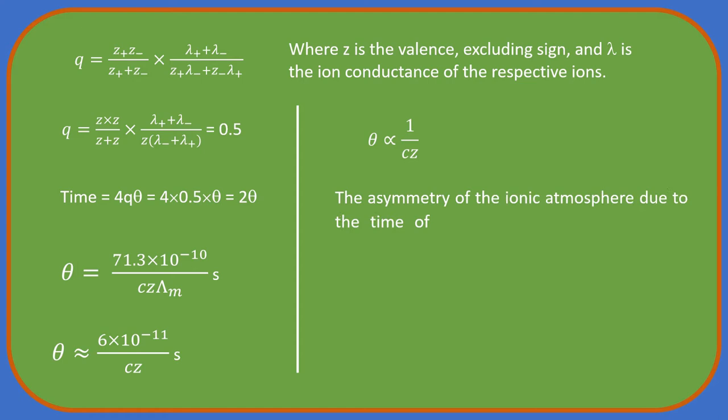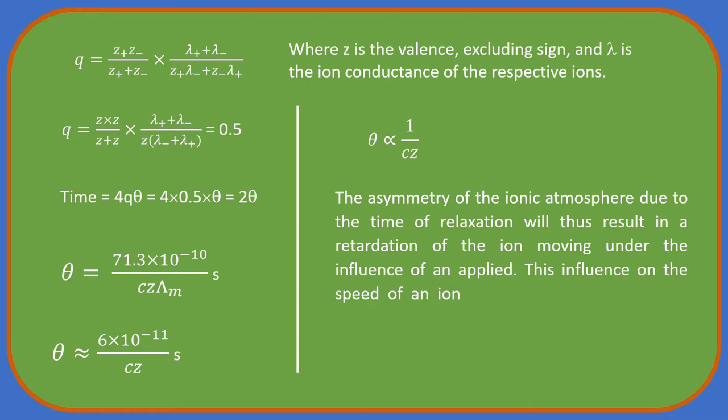The asymmetry of the ionic atmosphere due to the time of relaxation will thus result in a retardation of the ion moving under the influence of an applied field. This influence on the speed of an ion is called relaxation effect or asymmetry effect.